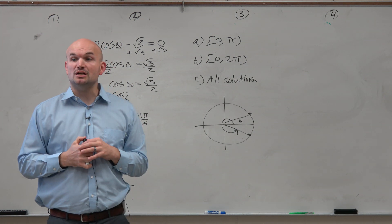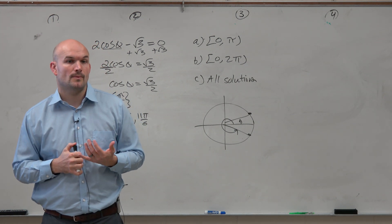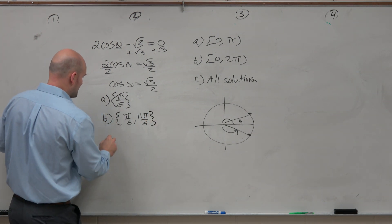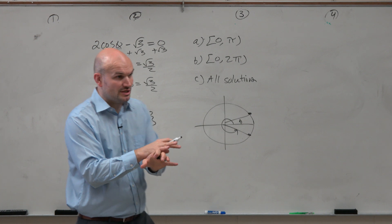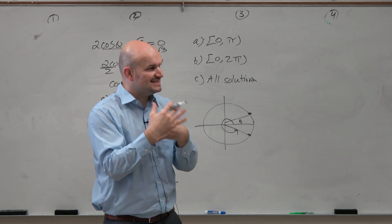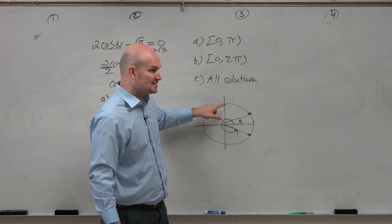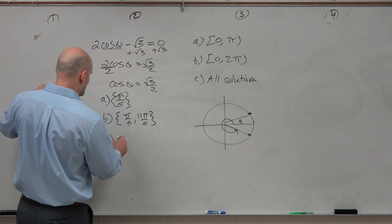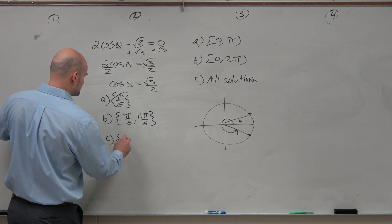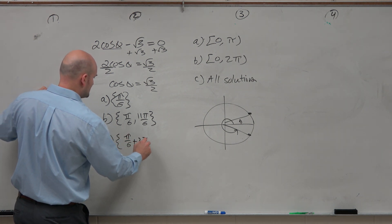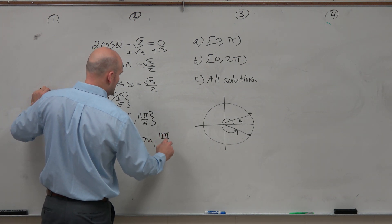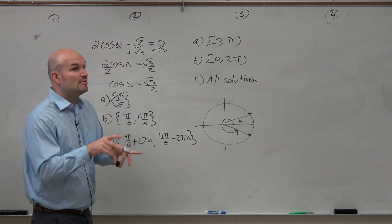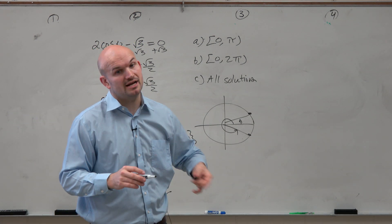And if I said find all of the solutions, I would put both. But remember, there's no longer any restriction. So what would I need to add to π over 6 to get to my next solution? 2π. So this would be π over 6 plus 2πn, and this one would be 11π over 6 plus 2πn. Remember, n can be positive or negative — we can go in the negative direction as well.